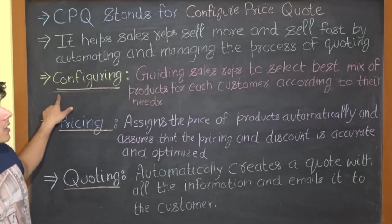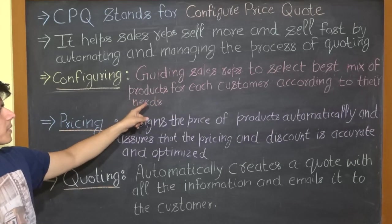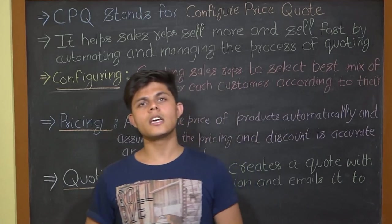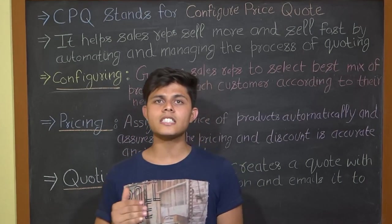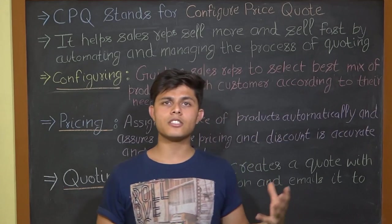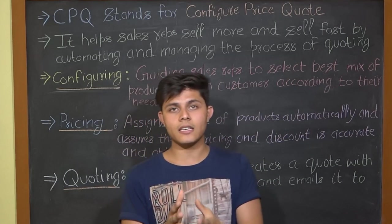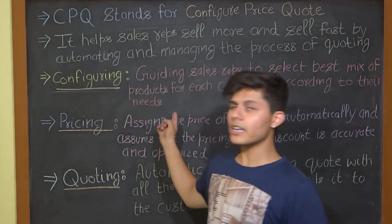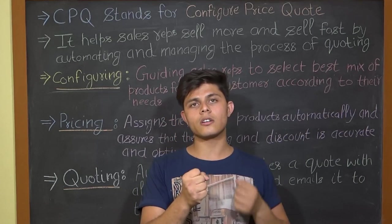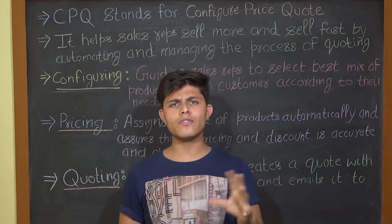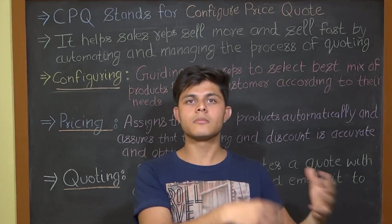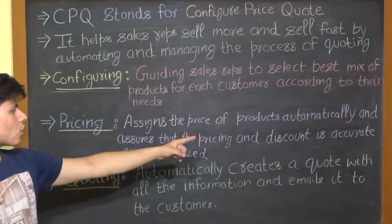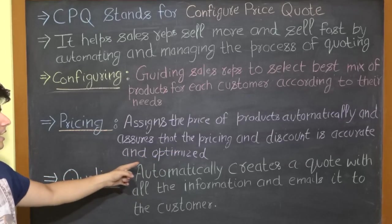The first term is Configure — guiding sales reps to select the best mix of products for each customer according to their needs. The CPQ tool narrows down the list of products based on the customer's needs and requirements so the sales rep doesn't have to do it manually. This step helps them get the list of products or services best suitable for that customer based on various values present on the customer's record.